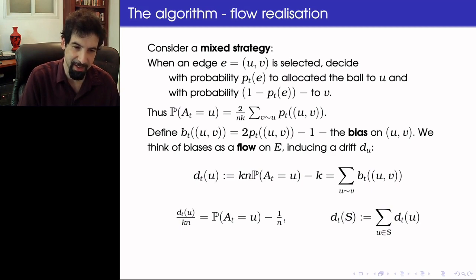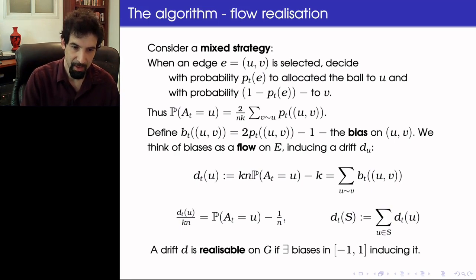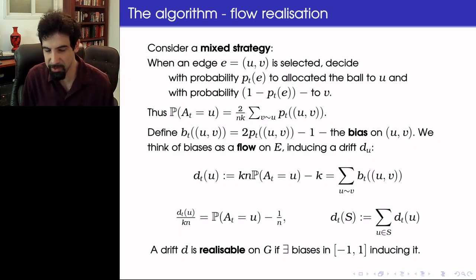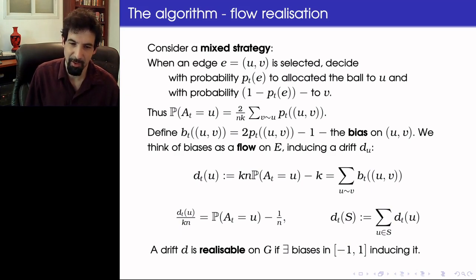And we normalize it in the following way. We define the drift at u to be the sum of the biases over the edges involving u. And if we take this drift and divide it by kN, then this would be the probability of allocating to u, minus the probability if we would allocate at random whenever we get an edge. And we generalize this to say that the drift of a set is the sum of the drift of the vertices containing it. Now we say that the drift is realizable on a graph if we can find biases in [-1,1] that induce it, which would correspond to the ability to find probabilities of allocating something that induce this drift. So if there are proper probabilities of allocating to u and to v for every edge, given that the edge was chosen, that induce a drift, it's a realizable drift. And we are going to now define which drifts are desirable for us that would result in exponential concentration in the scale that we're interested in establishing. And then we will make sure that we can actually realize them in a reasonable way.